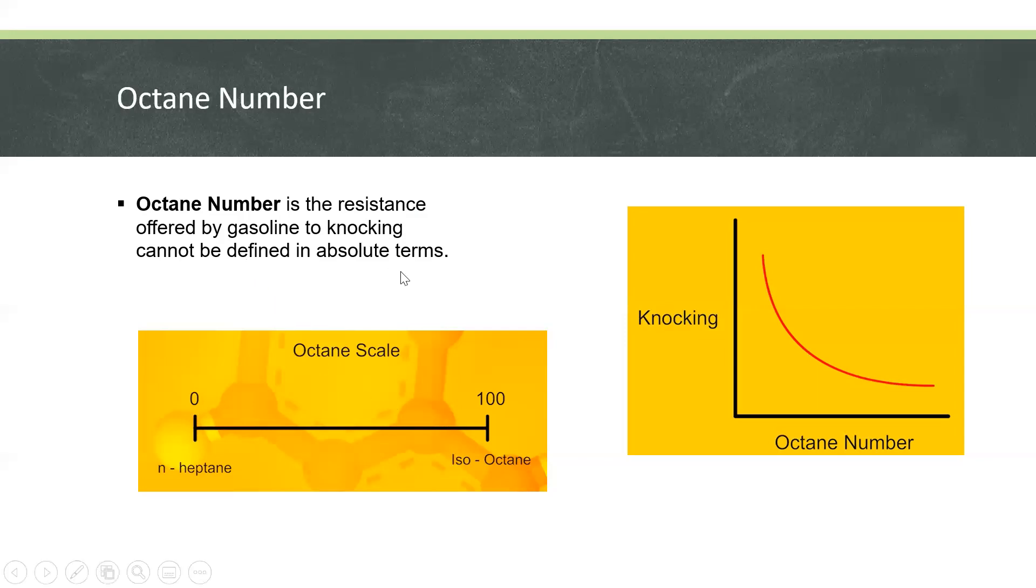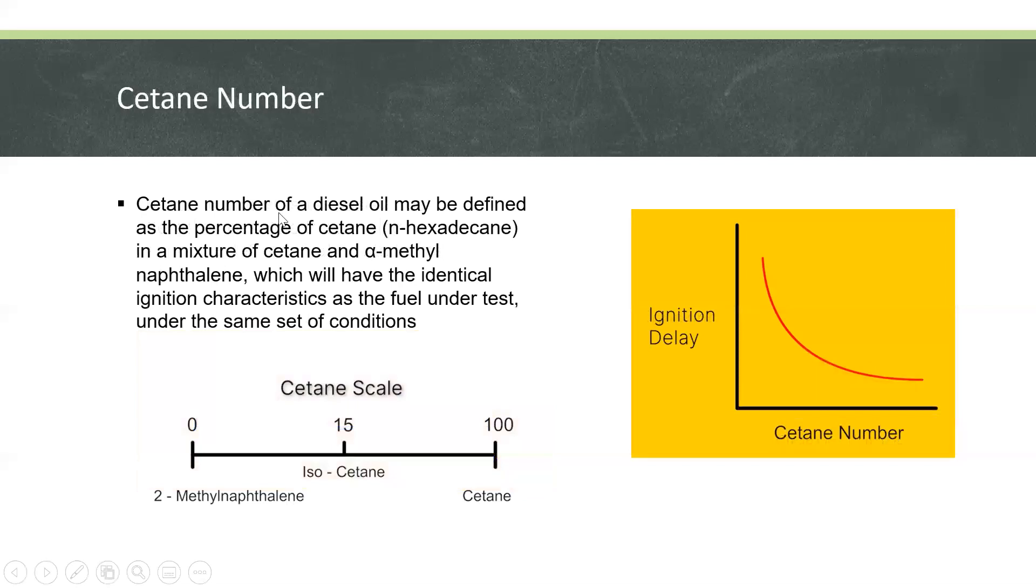This octane number refers to gasoline. The cetane number is for diesel oil, which may be defined as the percentage of cetane or n-hexadecane in a mixture of cetane and alpha-methylnaphthalene which will have identical ignition characteristics as the fuel under test under the same set of conditions.